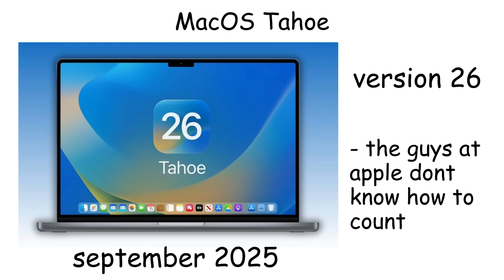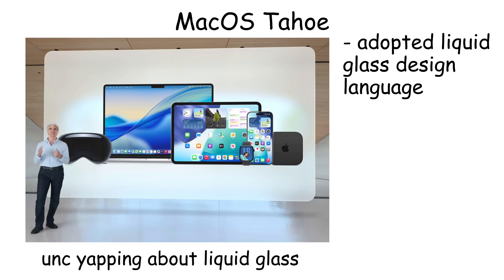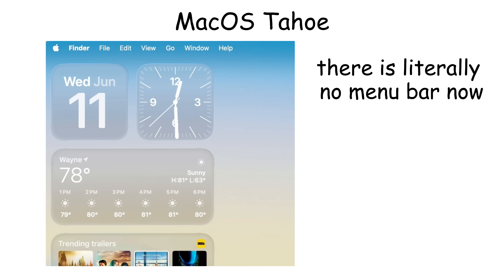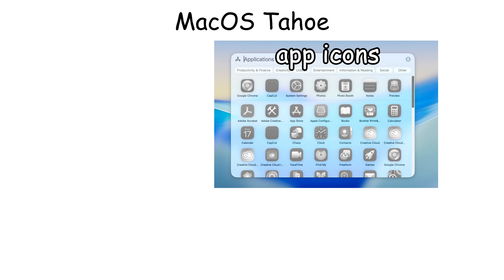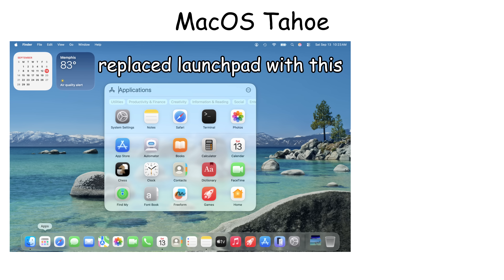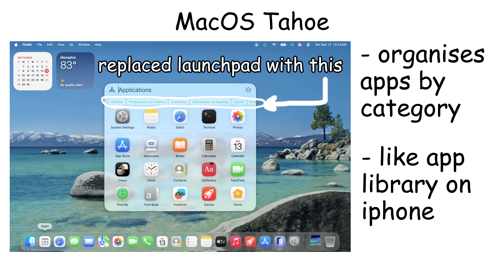macOS Tahoe was released in September 2025 as version 26, introducing Apple's biggest visual redesign in years. It adopted the liquid glass design language, which features translucent materials that behave like real glass, reflecting light and color dynamically. The menu bar became virtually invisible, making displays feel larger, while app icons, folders, the dock, and toolbars all received the transparent glass treatment. Tahoe also replaced Launchpad with a new applications interface that organizes apps by category, similar to the App Library on iOS.